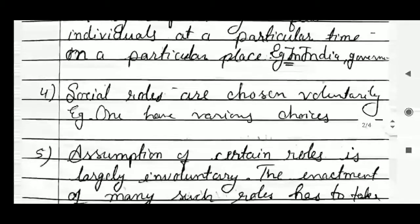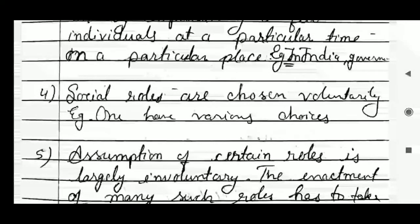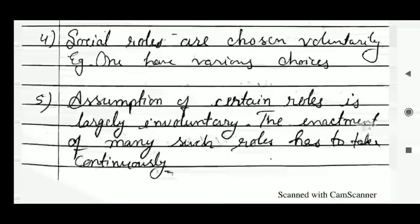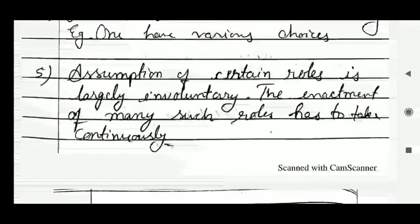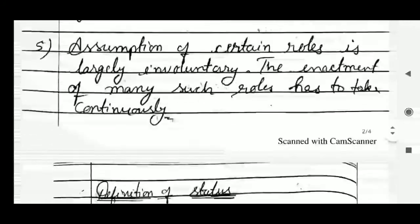Fourth, social roles are chosen voluntarily — an individual has many choices. Fifth, the assumption of certain roles is largely involuntary, and the enactment of many such roles has to take place continuously — some roles we have to accept even if we do not want to, and their enactment must happen continuously.